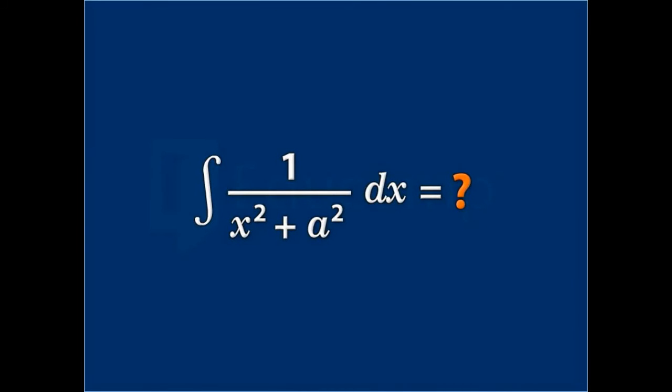Like 1/(x² + a²), where a is a constant. If there was 2x in the numerator, we would take the denominator equal to t. But since we have 1 in the numerator, we find such integrals by trigonometric substitution for x.